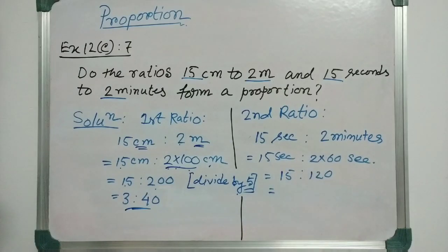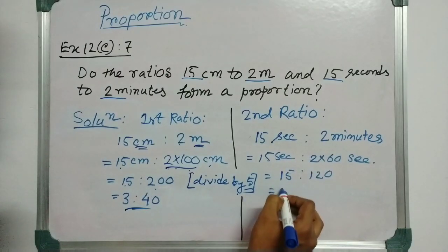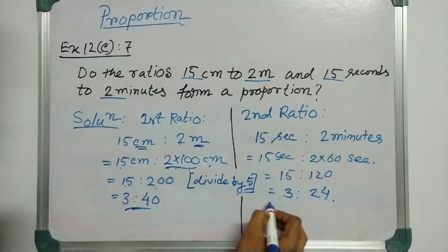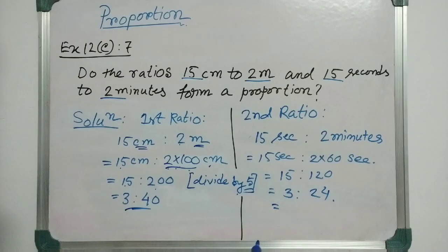So, this we can divide by 5 again. 5 into 15 is 3, and 5 into 120 is 24. So, this is 3 is to 40 and this is 1 is to 8. Now, we can see that 3 is to 40 is never equal to 1 is to 8.